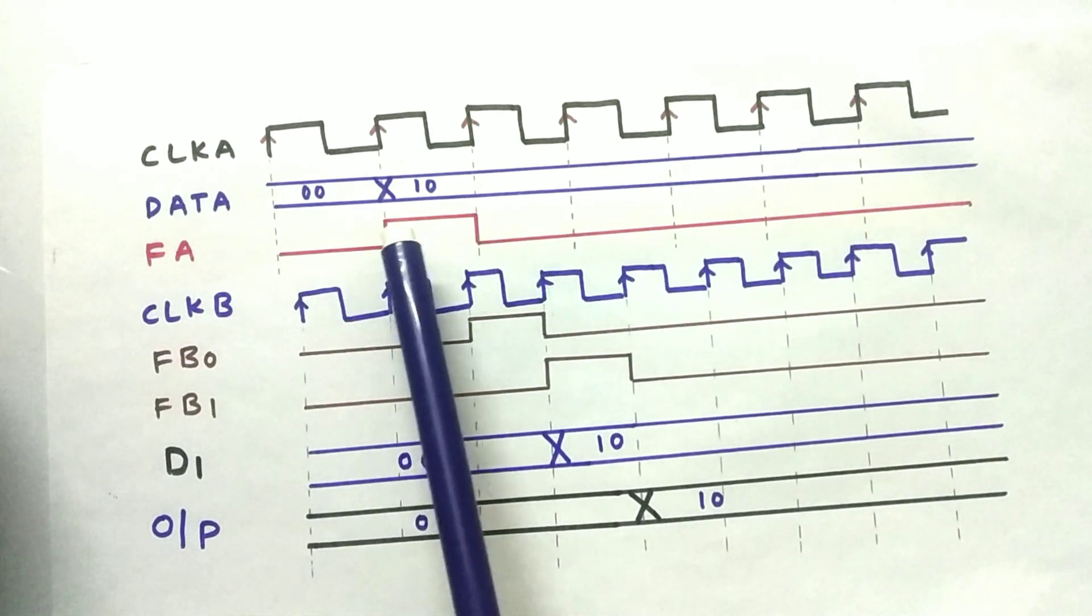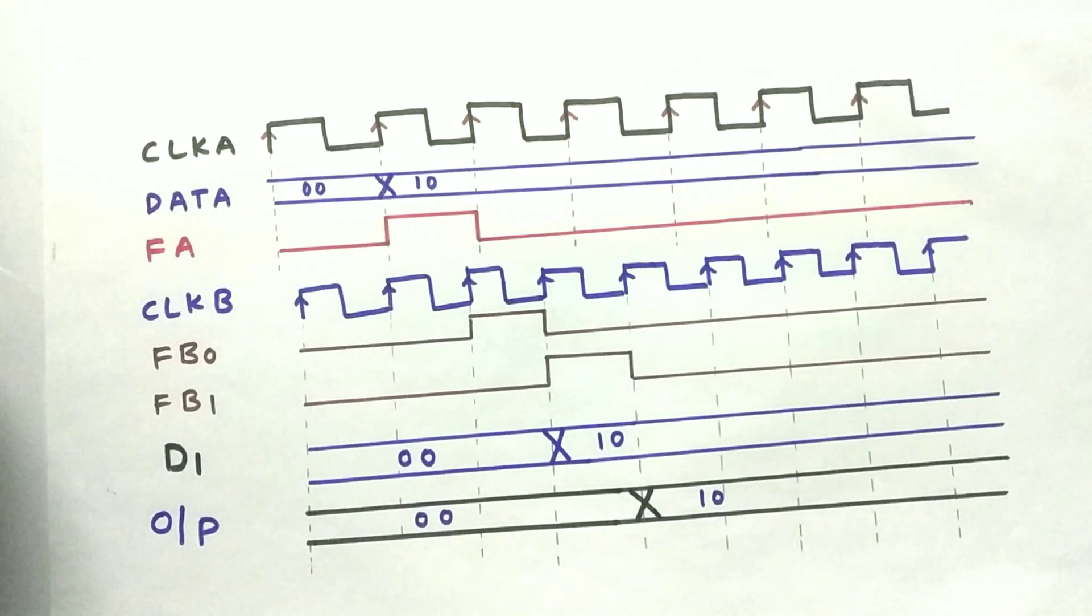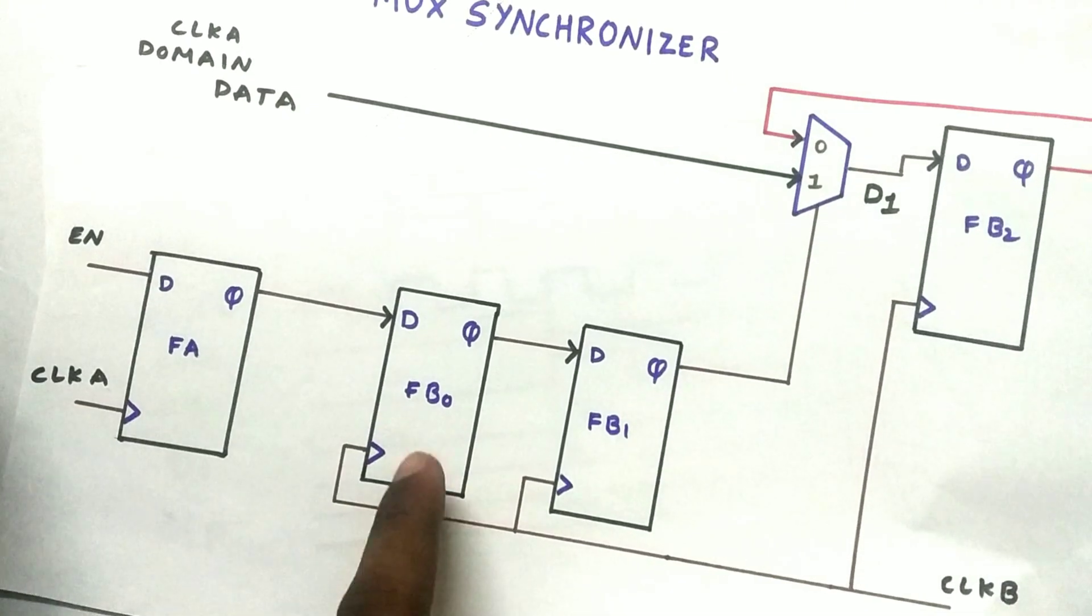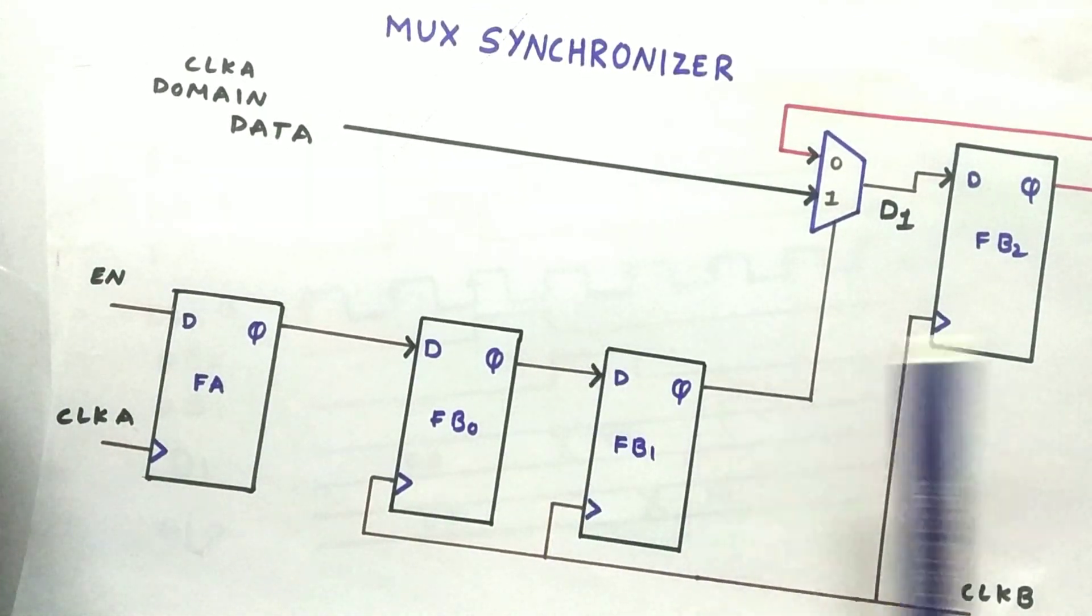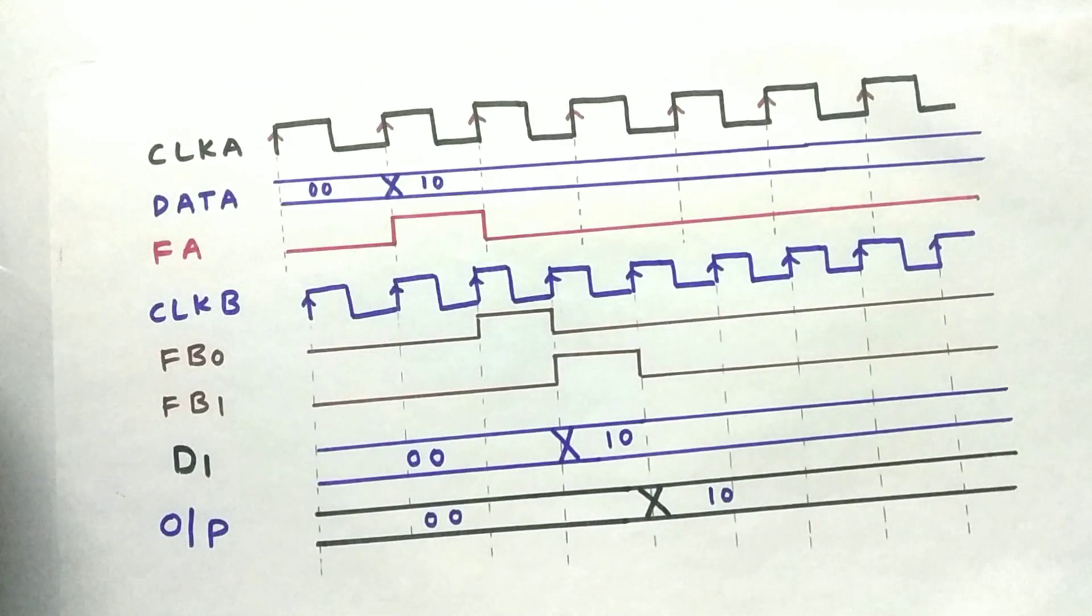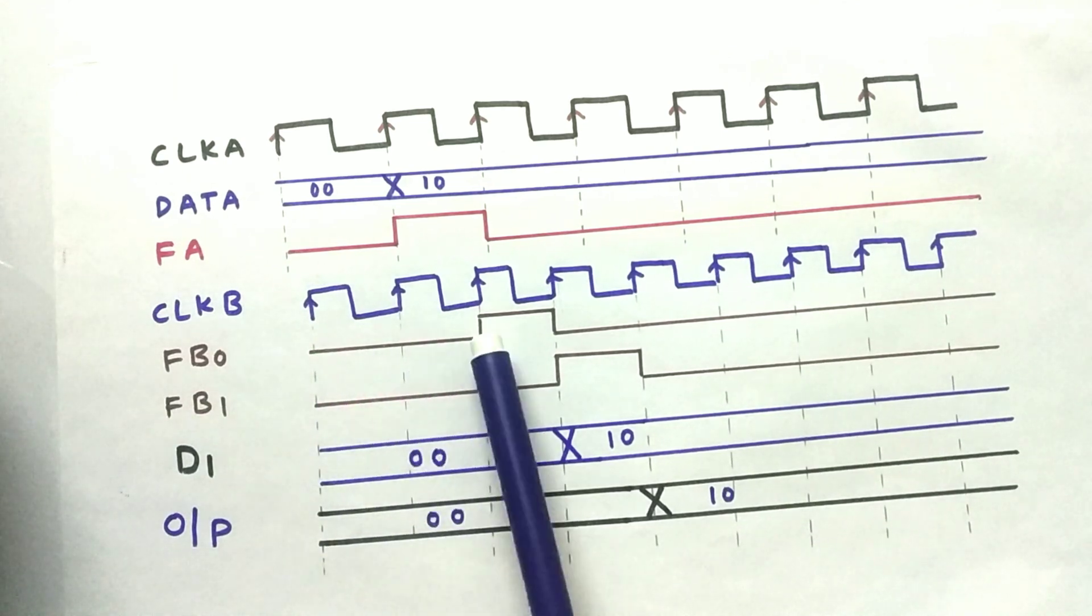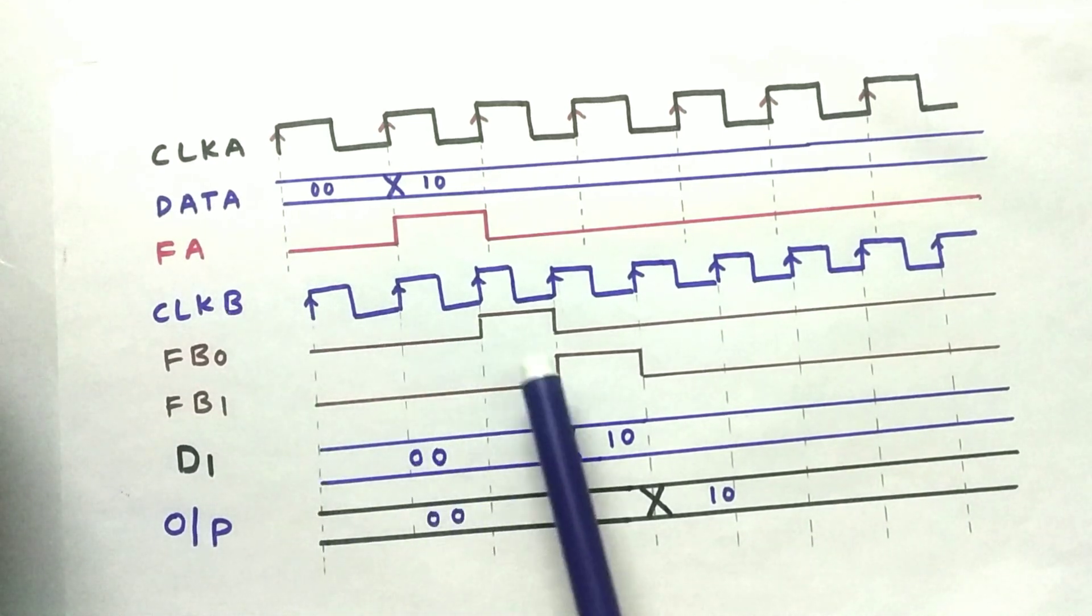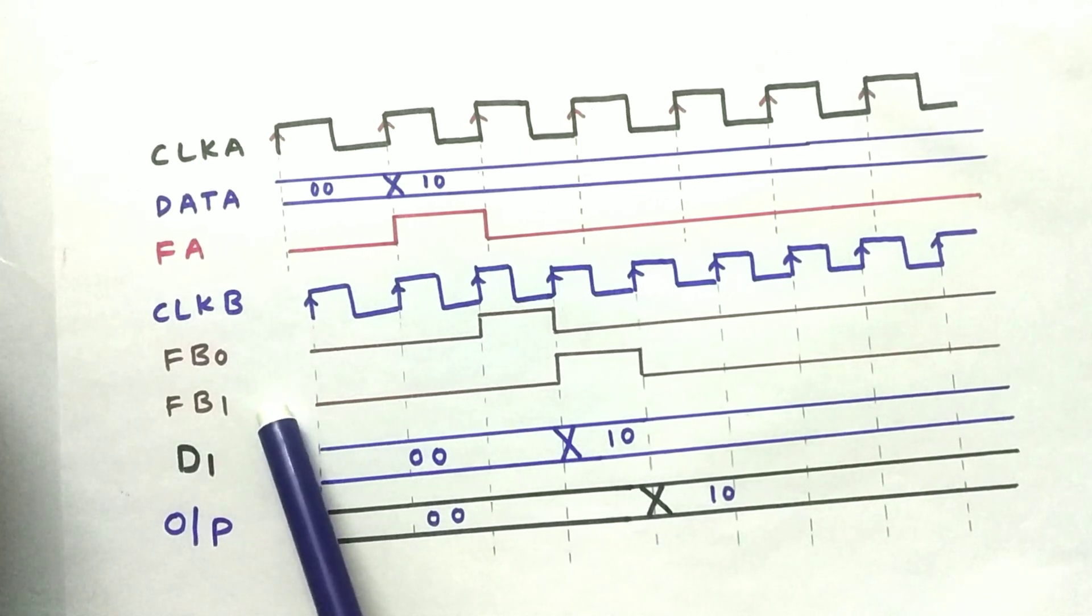We are sending this FA to FB0 and FB1. As you can see over here, this is the two-flop synchronizer and the output will be synchronized over here. As you can see that our enabled signal has been synchronized to clock B domain. We got our enabled signal at the flip-flop B0 and flip-flop B1.